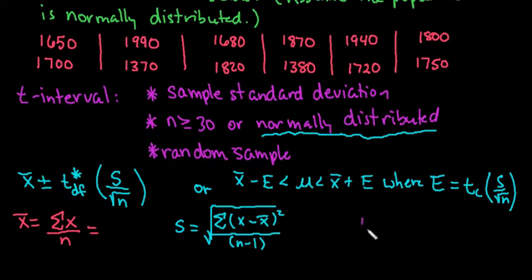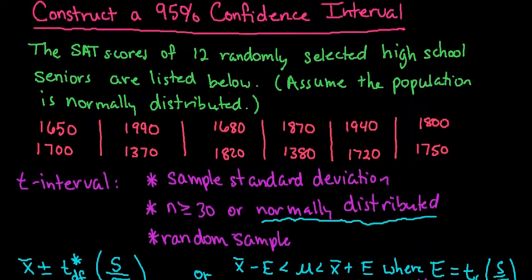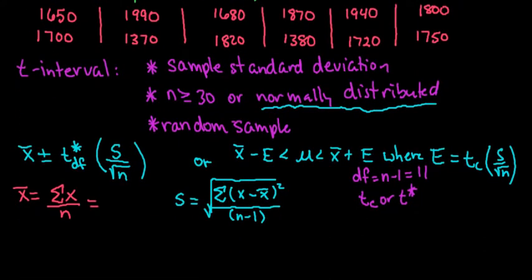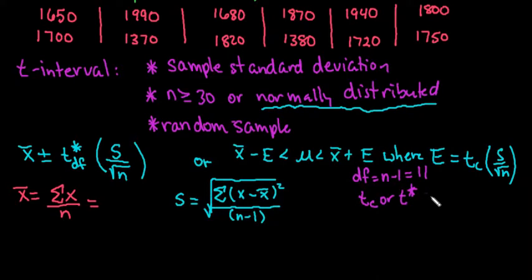The TC or the T star, whichever one you want to call it, remember we would look at a table for this and we would have to have our degrees of freedom. The degrees of freedom is equal to n minus one, so in this case it would be 11. It relies on our level of confidence. If we go back to the top, it says to create a 95% confidence interval. We would use 11 degrees of freedom, and it would be 2.201.